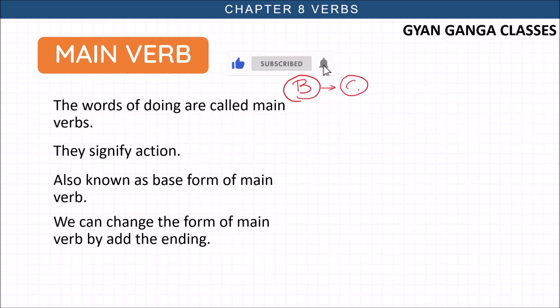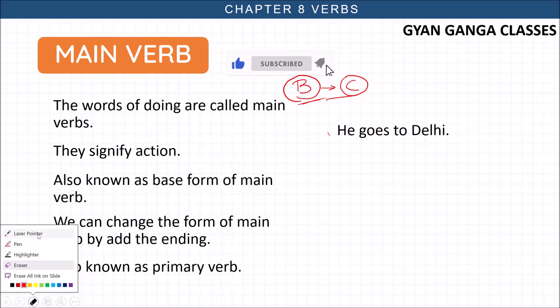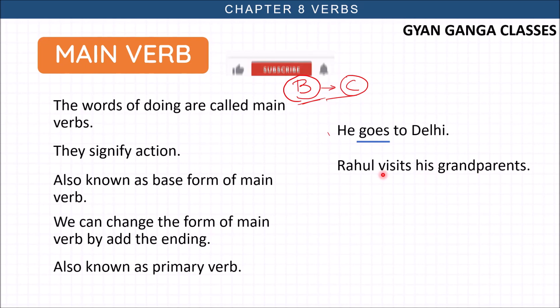They are the main verbs or also known as primary verbs. For example, he goes to Delhi. Goes is the main verb. Its base form is go. Rahul visits his grandparents. The action word is visits. The main verb is visit. When we are talking about he, she, it, or any specific name like proper noun, then we use the verb with s added. Clean your books. Here we are talking about you, so it is not cleans, just the base form clean. Clean is the main verb.